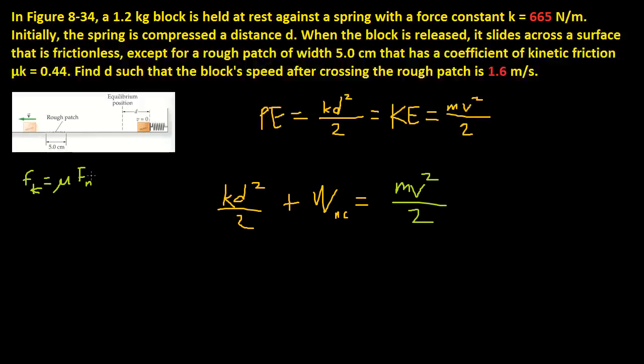The kinetic friction we know is μ times normal force. And what is normal force? Normal force is the same thing as mg in this context. Because it's not moving up or down, so it's just mg. Since work is force times distance,